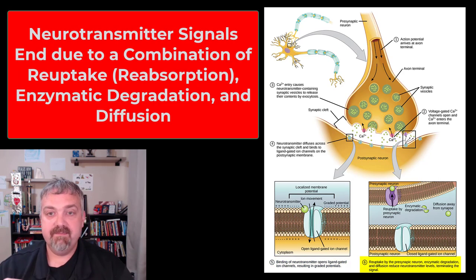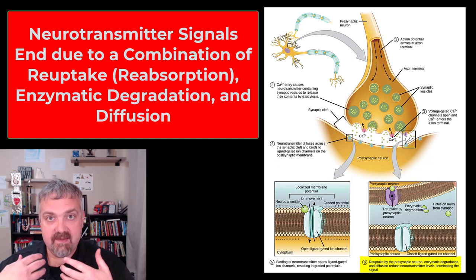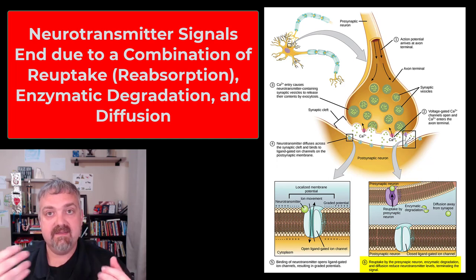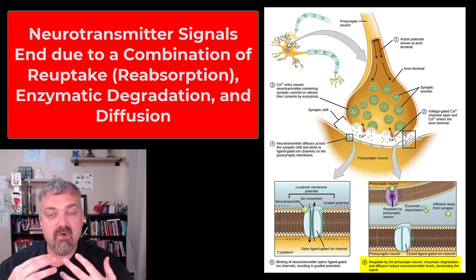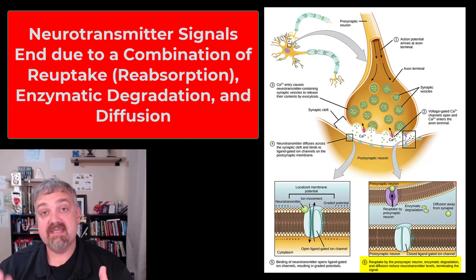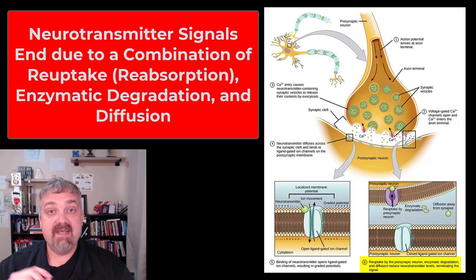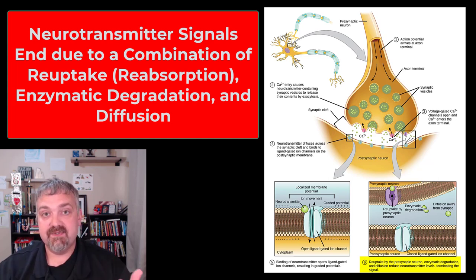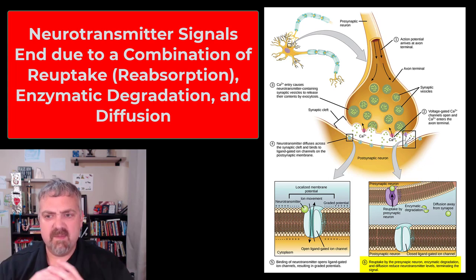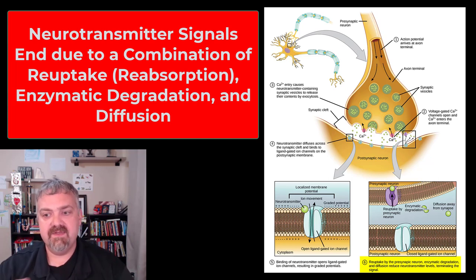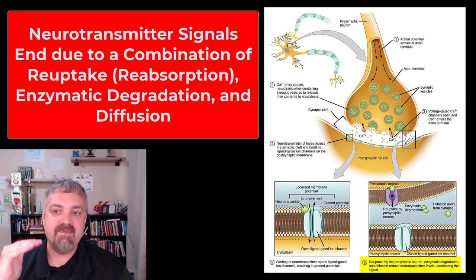Step six is how the synapse stops. As soon as neurotransmitters are released, they begin to be actively reabsorbed, and some are destroyed by enzymes. For example, at the neuromuscular junction, the enzyme acetylcholinesterase breaks down acetylcholine. Some neurotransmitter is destroyed, some is reabsorbed, and some simply diffuses away. Once the neurotransmitter concentration drops low enough, the signal stops. That's how synapses turn on and turn off.